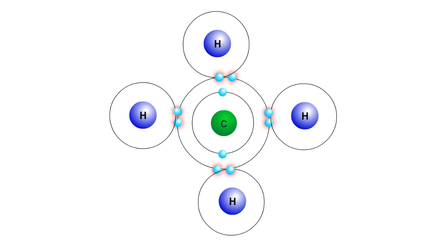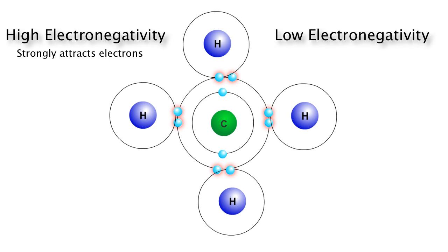This is because the atoms differ in their electronegativity, or their ability to attract electrons. If the electronegativity for an atom is high, then it strongly attracts electrons. If the electronegativity for an atom is low, it does not pull at the electrons as much.